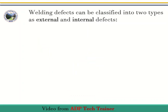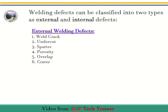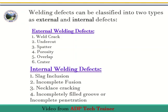Welding defects can be classified into two types: external and internal defects. External welding defects are: 1. Weld crack, 2. Undercut, 3. Spatter, 4. Porosity, 5. Overlap, 6. Crater.